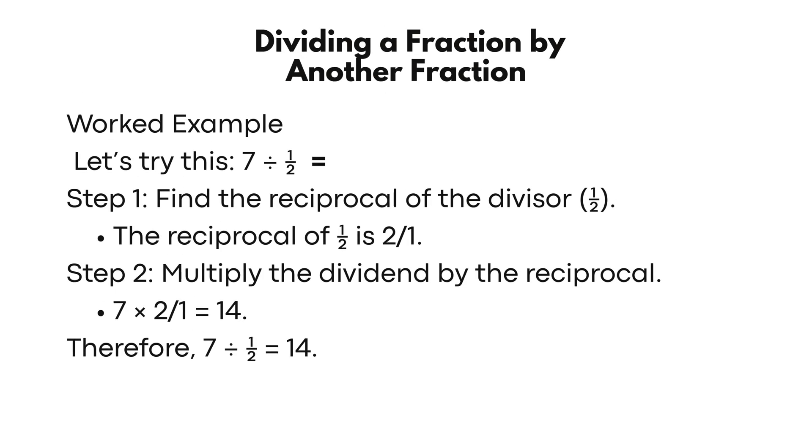Let's try this. 7 divided by 1 half. Step 1: Find the reciprocal of the divisor, 1 half. The reciprocal of 1 half is 2 over 1. Step 2: Multiply the dividend by the reciprocal. 7 times 2 over 1 equals 14. Therefore, 7 divided by 1 half equals 14.